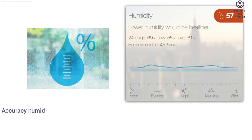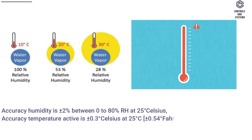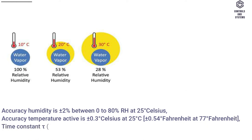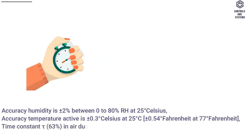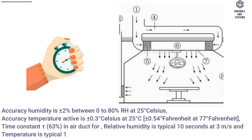Accuracy humidity is ±2% between 0 to 80% RH at 25°C. Accuracy temperature active is ±0.3°C at 25°C, or ±0.54°F at 77°F. Time constant at τ63%: in air duct, relative humidity is typically 10 seconds at 3 m/s, and temperature is typically 125 seconds at 3 m/s.